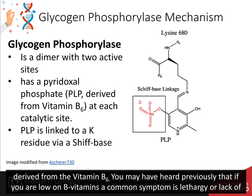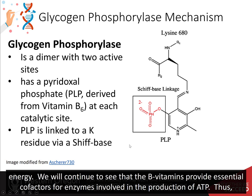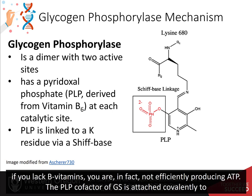You may have heard previously that if you are low on B vitamins, a common symptom is lethargy or lack of energy. We will continue to see that the B vitamins provide essential cofactors for enzymes involved in the production of ATP. Thus, if you lack B vitamins, you are in fact not efficiently producing ATP.